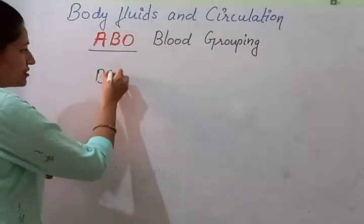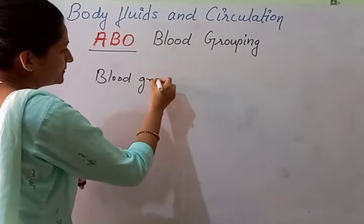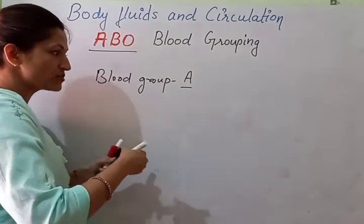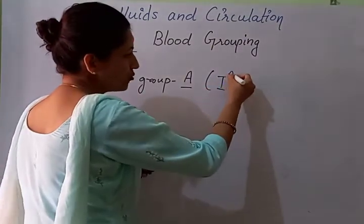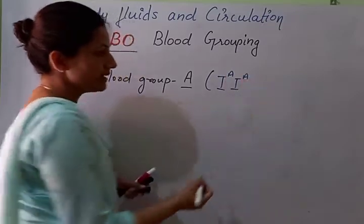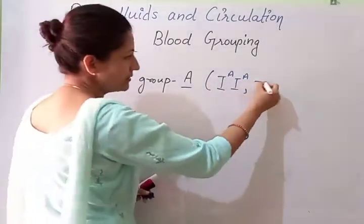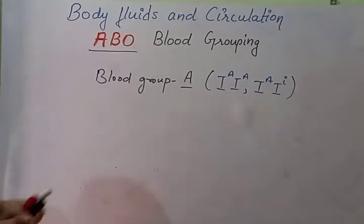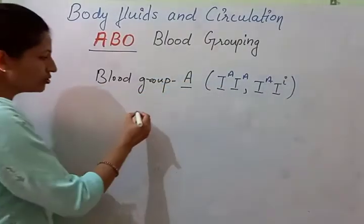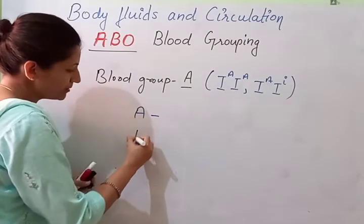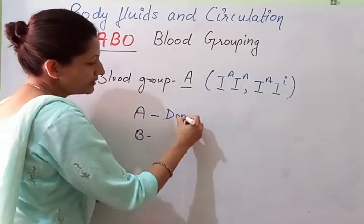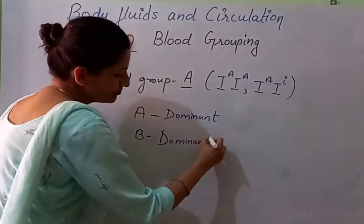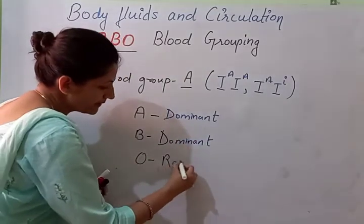If we talk about blood group A, the genotypes responsible can be two: one is the homozygous condition, that is I-A and I-A, and the second is the heterozygous condition. Now, blood group A and blood group B are both dominant, while blood group O is recessive.